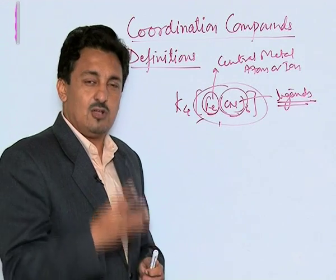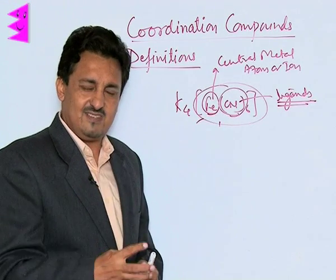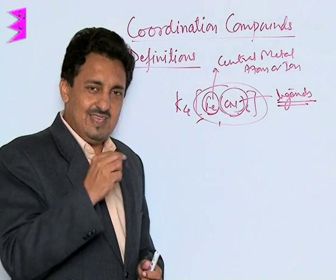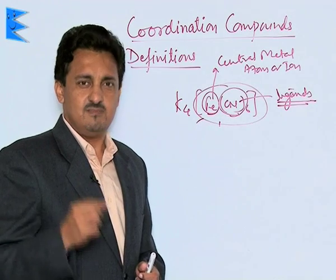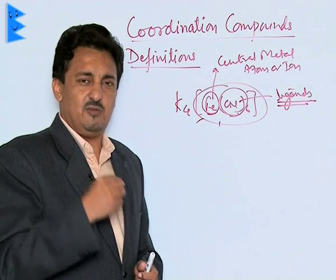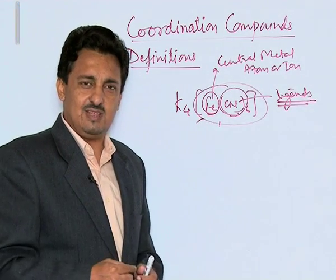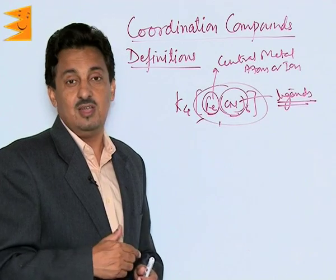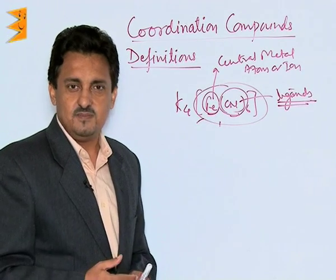Ligands are good Lewis bases and in very simple terms can be defined as the species which donate a pair of electrons to the metal atom or ion and form a dative bond with them are called ligands.